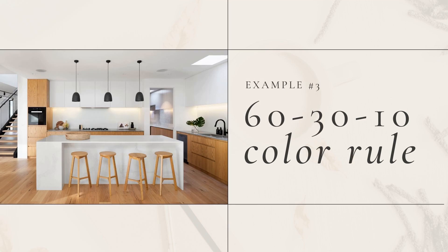In this third example, white is again our primary 60% color. The brown wood is our 30%. And the black is our 10% — you see that in the lampshades, the stove, the stairs, and on the faucet as well. So that is our 60-30-10 broken down in another interior design example.